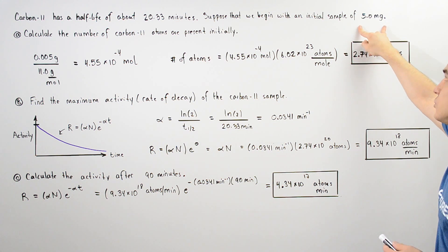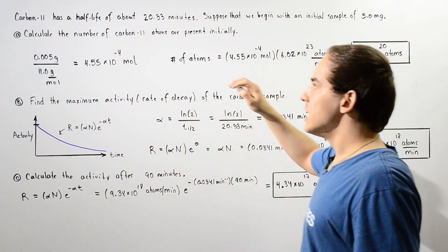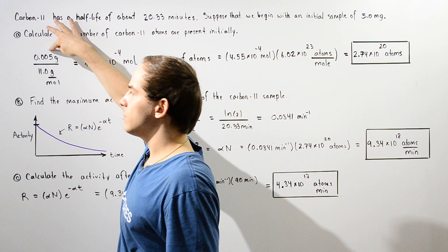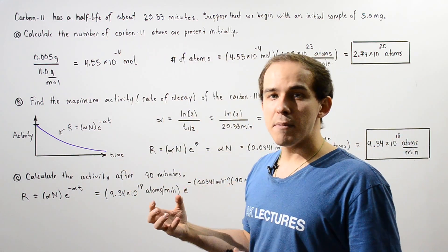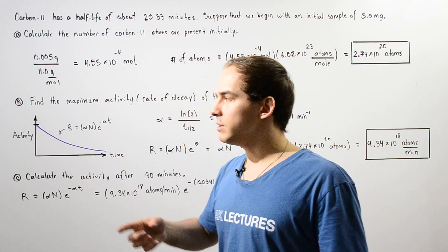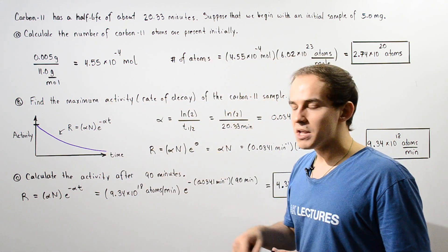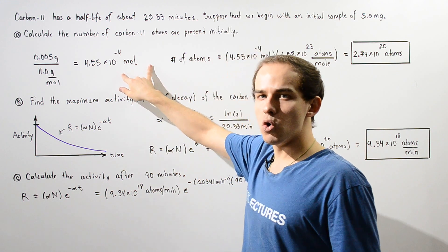we have to use our initial sample given in grams. So we take this and convert it into grams by dividing it by 1,000. So we have 0.005 grams and we divide that by the atomic mass of carbon-11, namely 11 grams per mole. The grams cancel and we're left with moles.